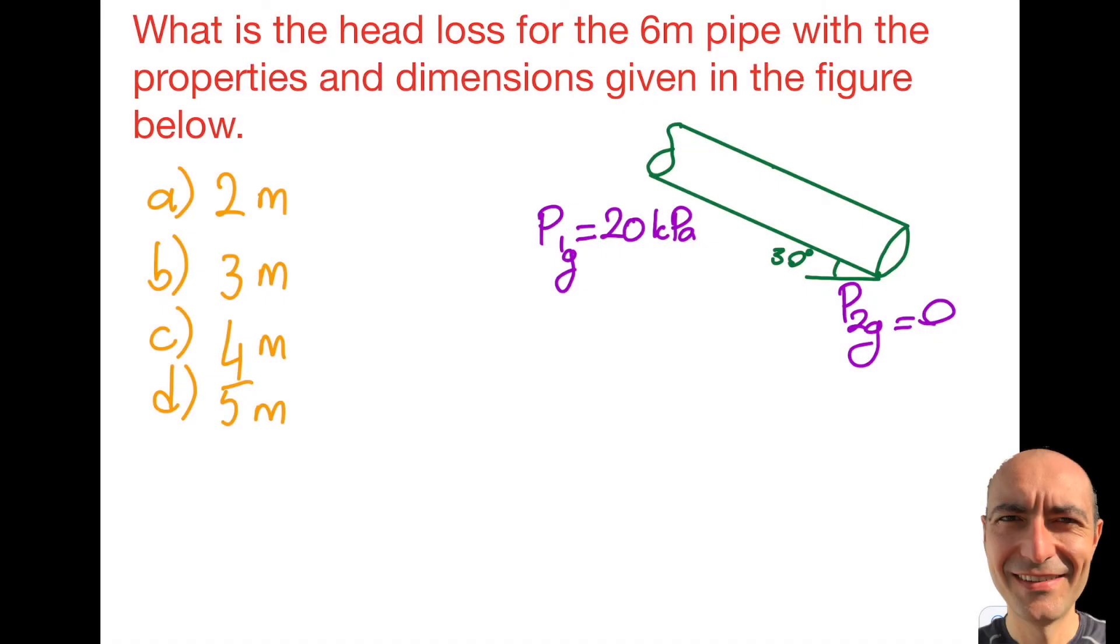Alright, hello everybody. So today let's look at a head loss question. Here is what it says. This head loss for a 6 meter, so the length is given, a 6 meter pipe with the property and dimensions given in the figure below. That's my question.